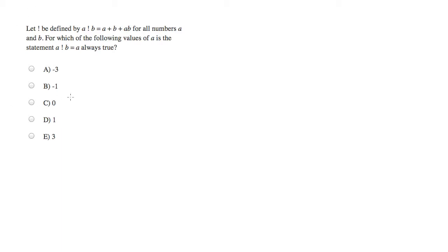This is the real Tom Rose, and we're dealing with a custom function here. The custom function is A exclamation point B, and that's equal to A plus B plus A times B.